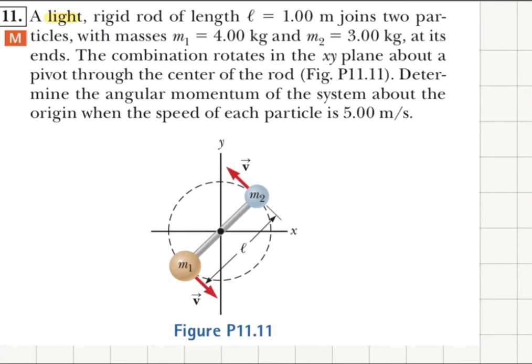It joins two particles with masses m1 equals four kilograms and m2 equals three kilograms at its ends. The combination rotates in the xy plane about a pivot through the center of the rod.